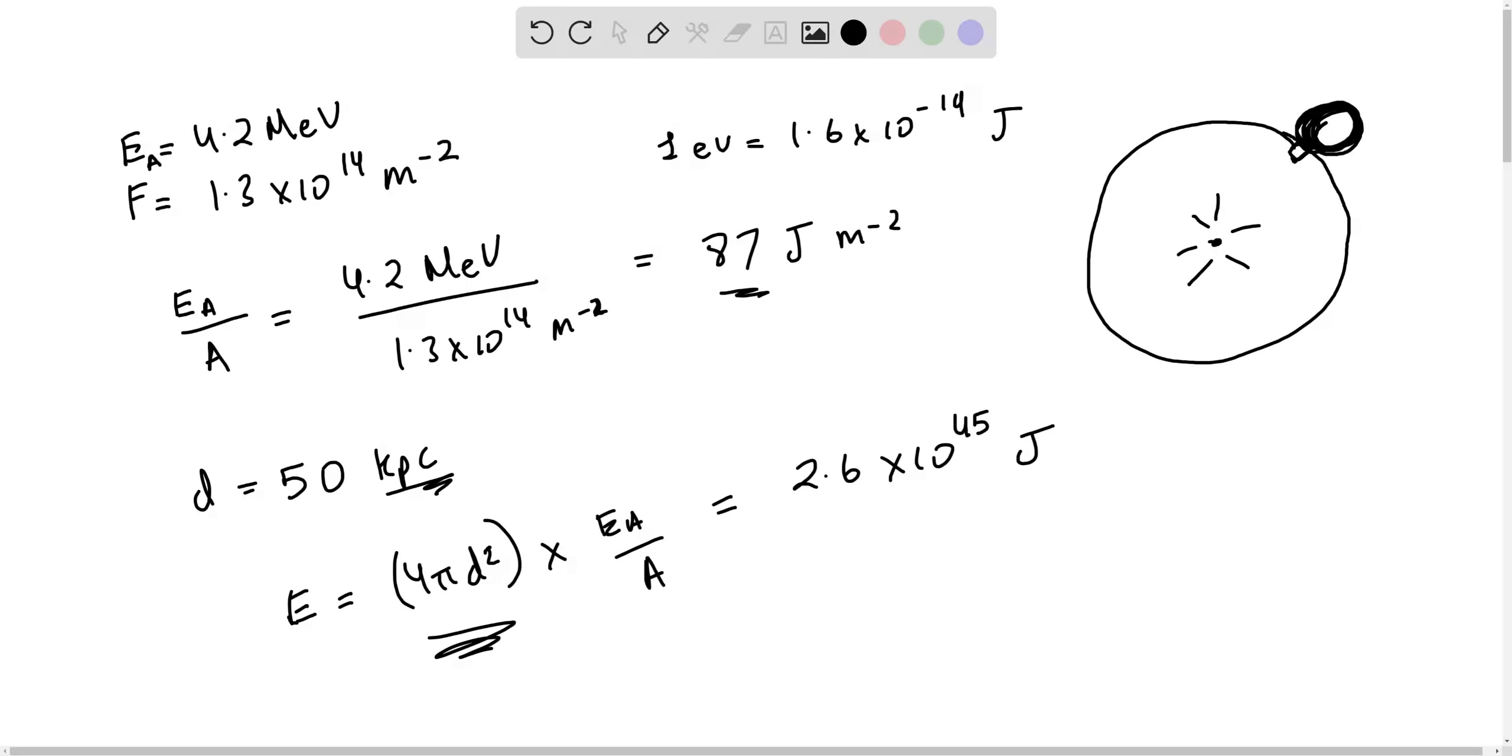At the LMC detector on Earth, we detect the flux, and that's what was given at the start. Now we're told to find the total energy output from the source. That's why we have to multiply the flux by the total surface area of the sphere.